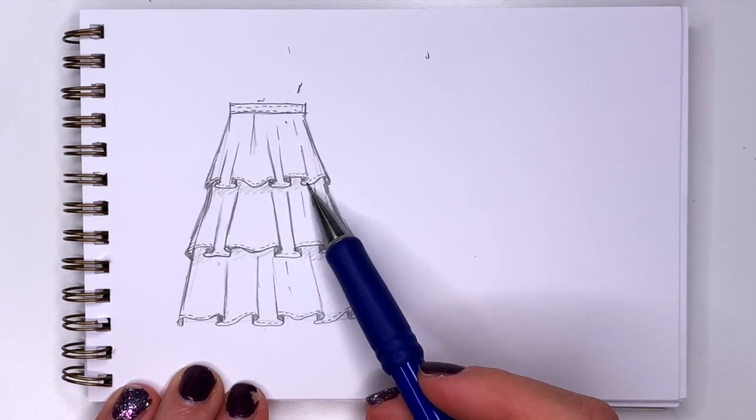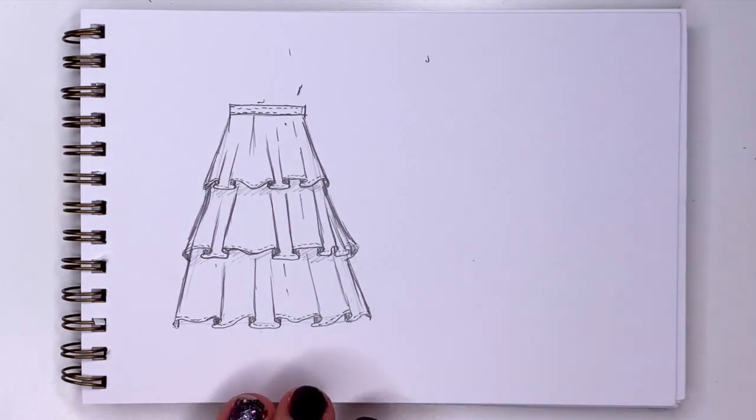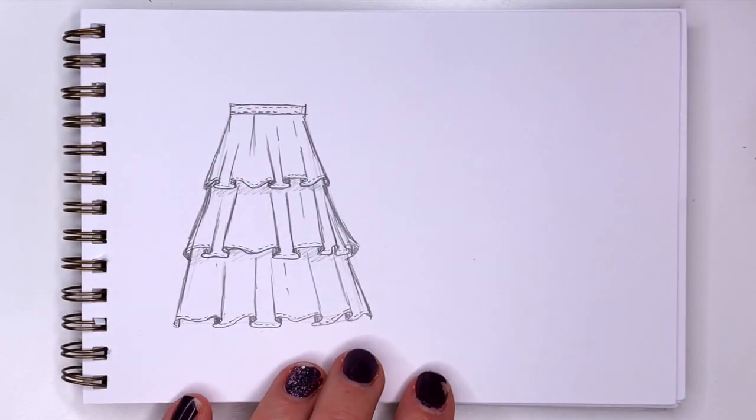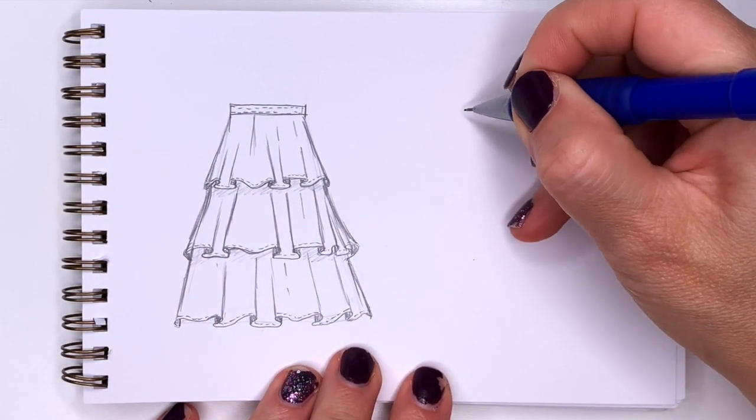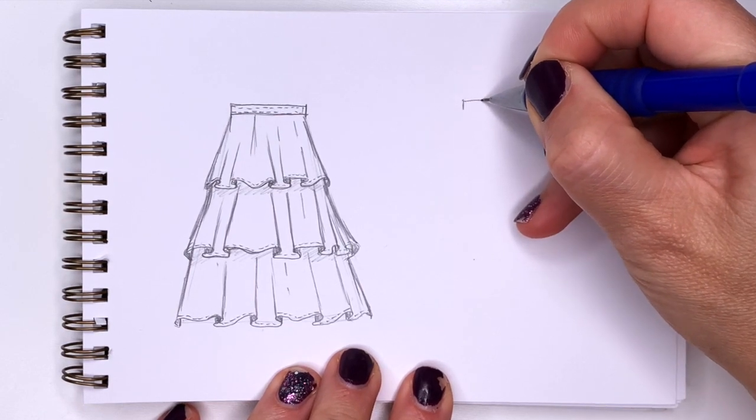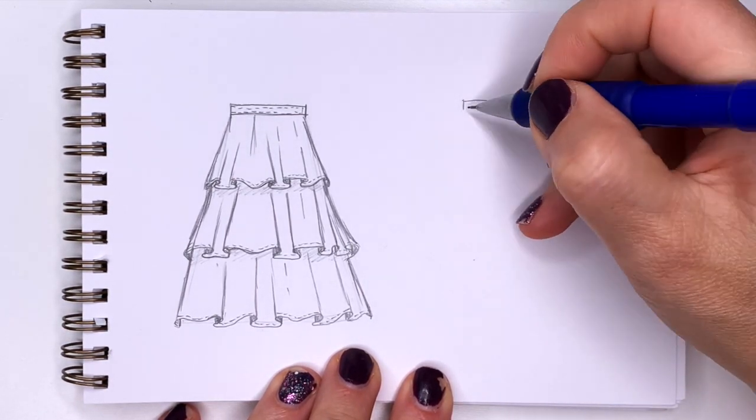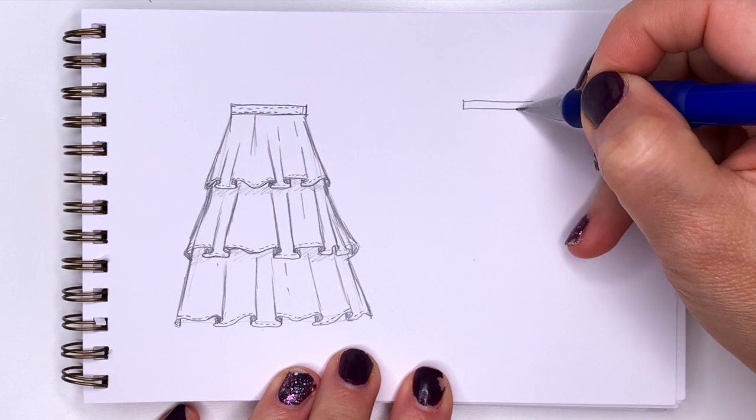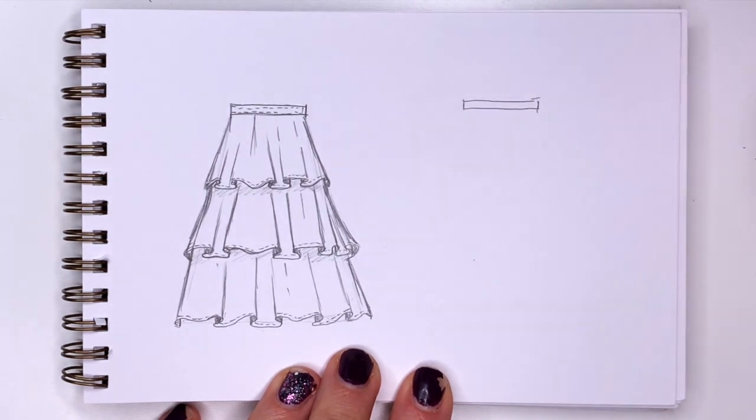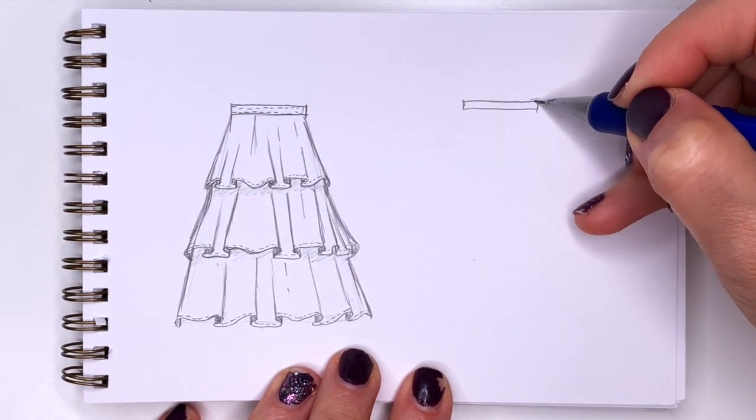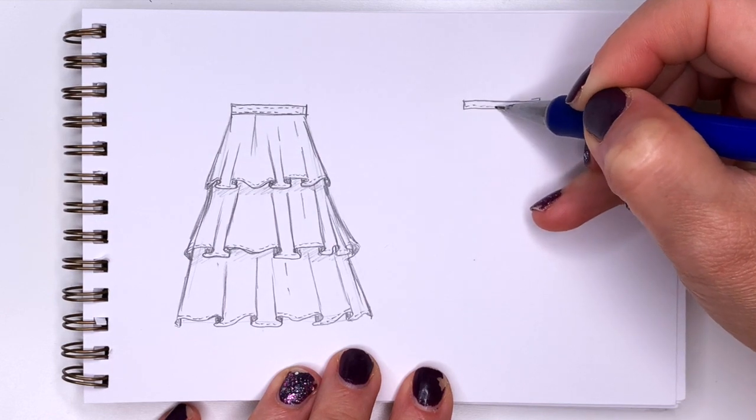Now I'm going to move on to my second skirt. The second skirt is going to be also tiered but it's going to be asymmetrical. So a little waistline. Same thing. Rectangle. Same lines if you want them.